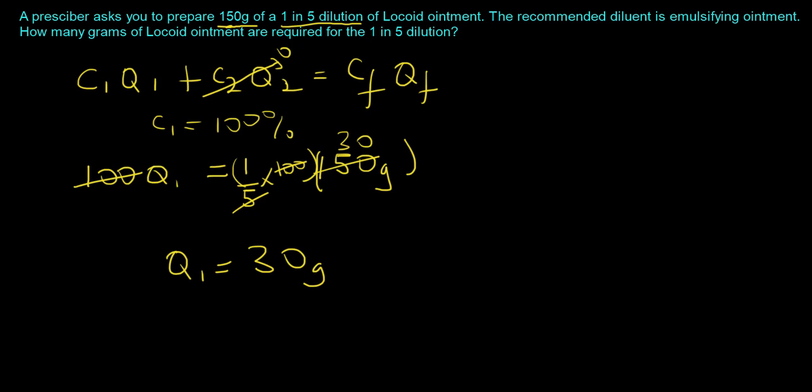Once again, to highlight the key things, your C1 is going to be 100%, your Cf is a 1 in 5 dilution so it's basically a fifth of 100, and your final quantity is given to you. When you set up the algebra, your solution becomes Q1 being equal to 30 grams.